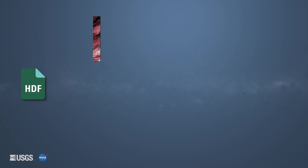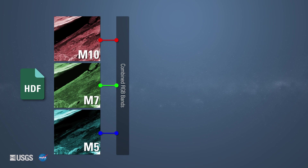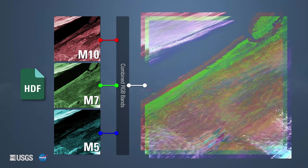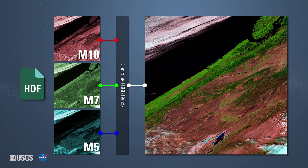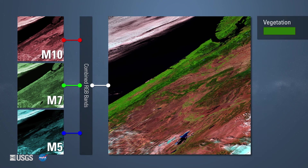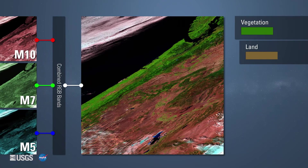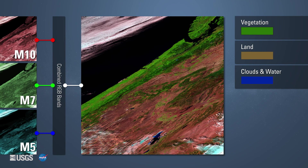A third band combination, M10, M7, M5, is used to show natural color. This band combination exaggerates natural colors, making it easier to differentiate between land features. In this image, vegetation is shown as bright shades of green, land as shades of brown, and clouds and water are shown as shades of blue.